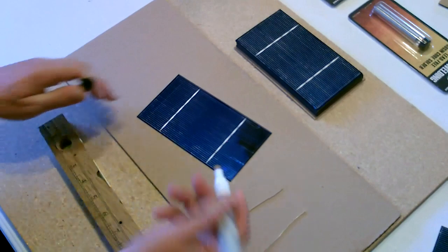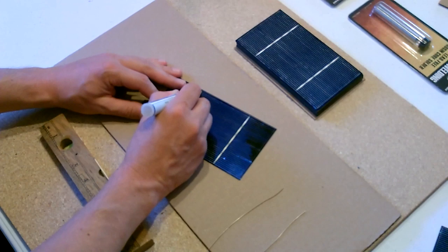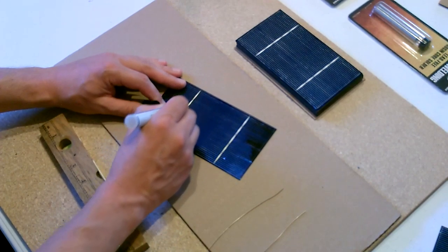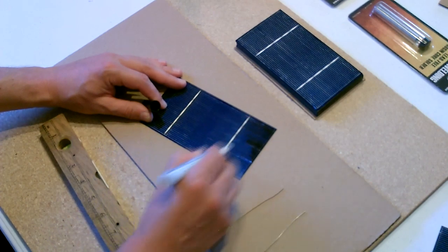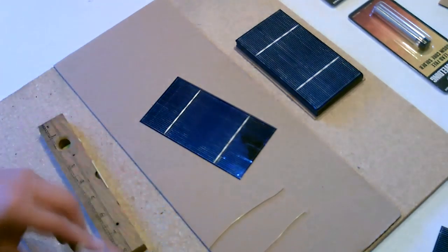Now the first step in tabbing this, take a flux pen, a Rosin flux pen, run it up and down the white line on the front of the panel. These white lines are the negative terminals of the solar cell or think of it as like a little mini solar battery. Positive connectors are on the back.